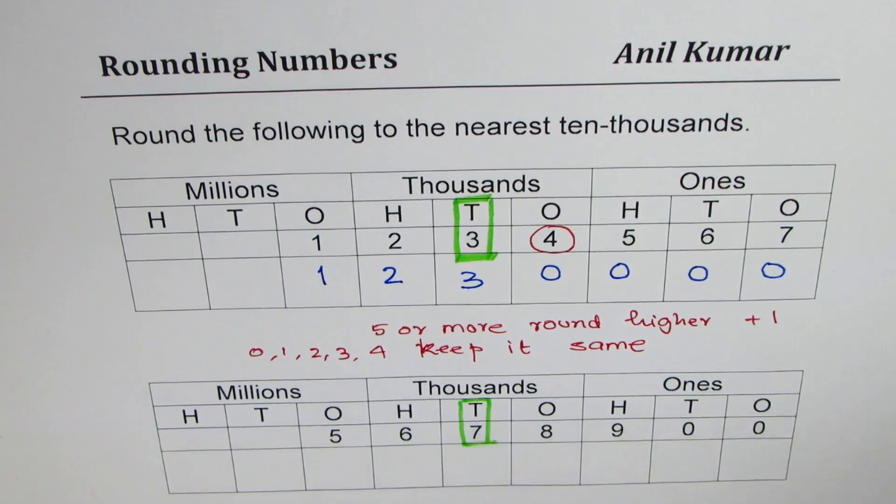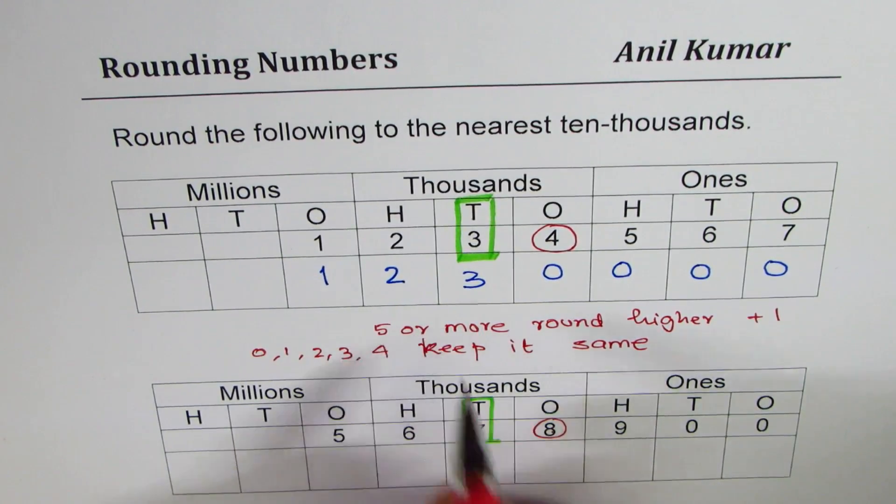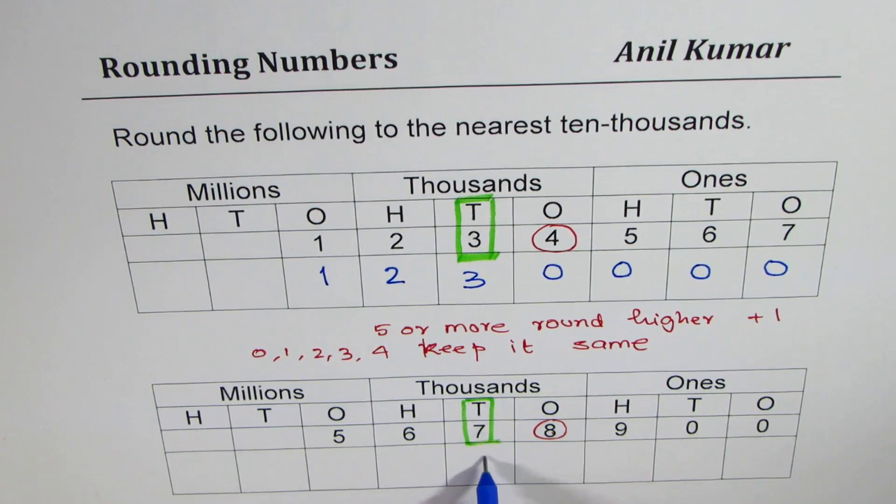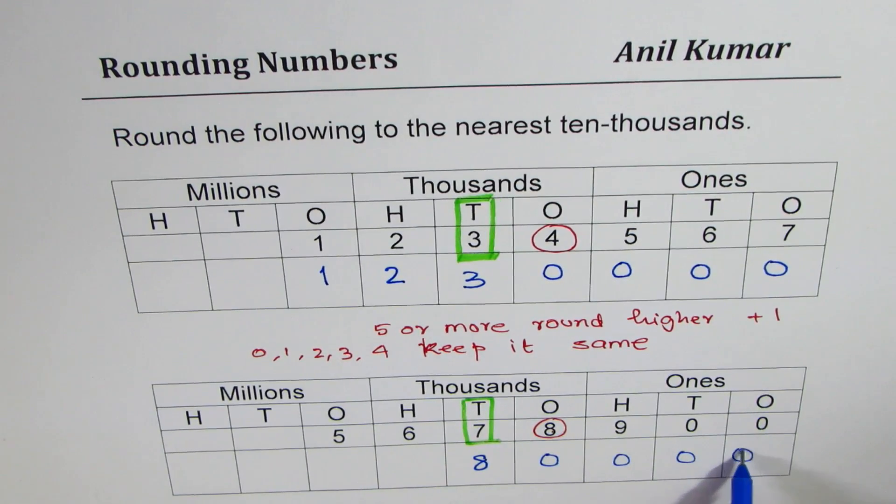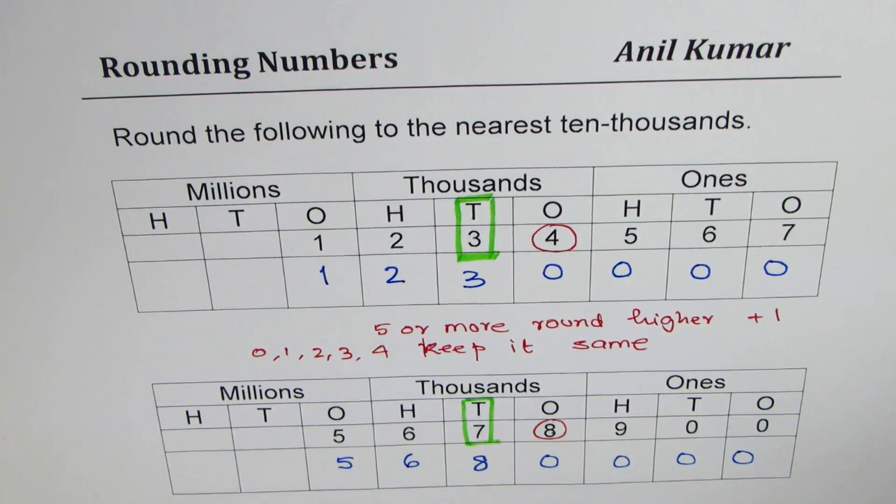Let me start the other way. What is the number on the right of 7? The number to the right is 8 which is 5 or more. And therefore I will make it higher. So I will make it 1 plus. So it becomes 8. Numbers before will all be made 0. On the left will be retained. 6 remains 6. 5 remains 5.